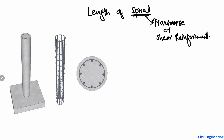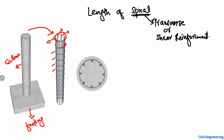Spiral reinforcement — if you look here, this is a column, a reinforced concrete column, being fixed at the footing. Inside this column, if you look at the reinforcement detail, you see that there is longitudinal reinforcement provided, which is used to carry the axial load. There is also circular reinforcement provided throughout the length of the column — these are known as the spiral, or the shear reinforcement.